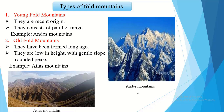Fold mountains are divided into two types: young fold mountains and old fold mountains. Young fold mountains are of recent origin — it doesn't mean a few years back; they were formed thousands of years ago, but they are young compared to old fold mountains.